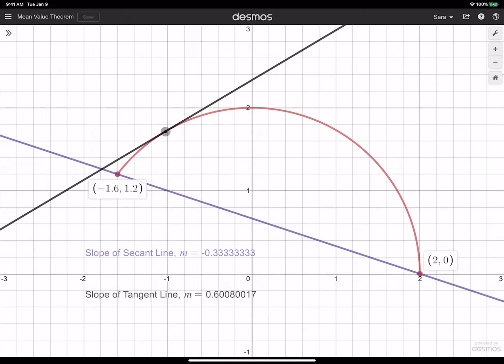And we've got our purple secant line drawn there. And then I've got a movable point here, where I've also got the slope of the tangent line given there. So I can slide this point. And at some point, I should find that my tangent line has a slope of negative one third. And I'm getting close. I don't know if I'll be able to get exactly there, but I can get really...